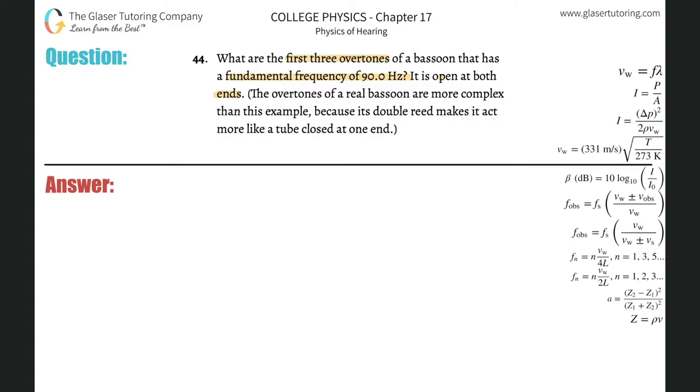So when we're talking about a tube that's open at both ends, we have to use this particular formula: the frequency of the nth harmonic will be equal to the nth harmonic multiplied by the velocity of sound divided by two times the length of the tube. And the harmonics here can be the first, the second, the third, the fourth, the fifth, and so on. Whenever they tell us the fundamental frequency, the fundamental frequency always correlates with the first harmonic.